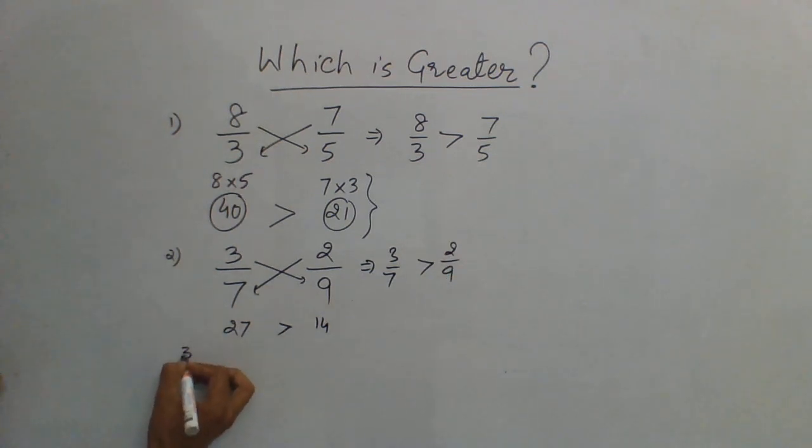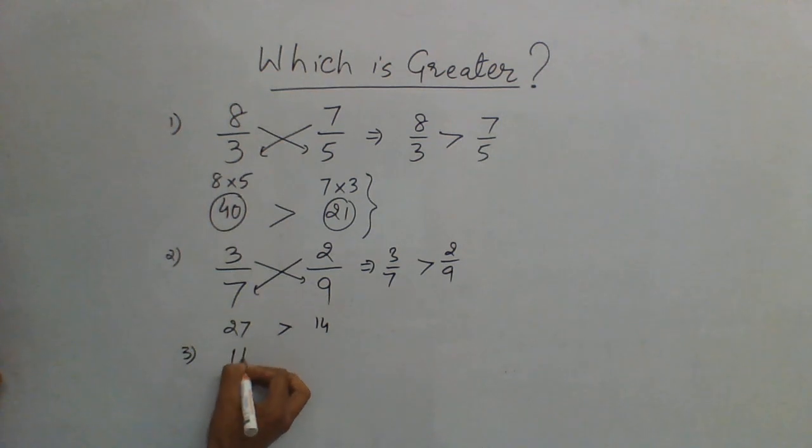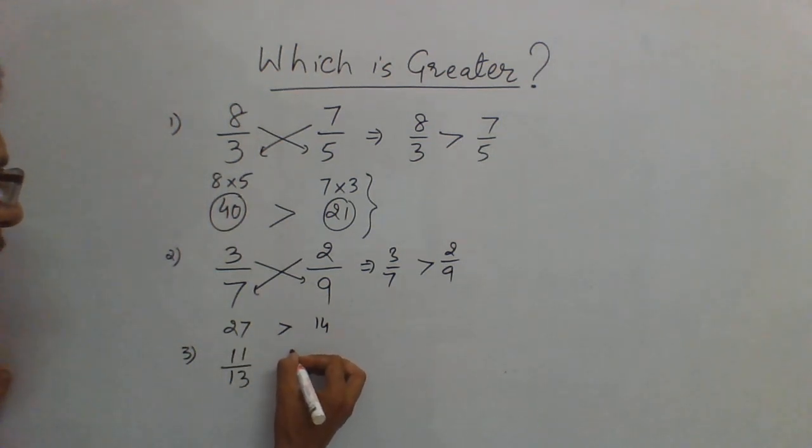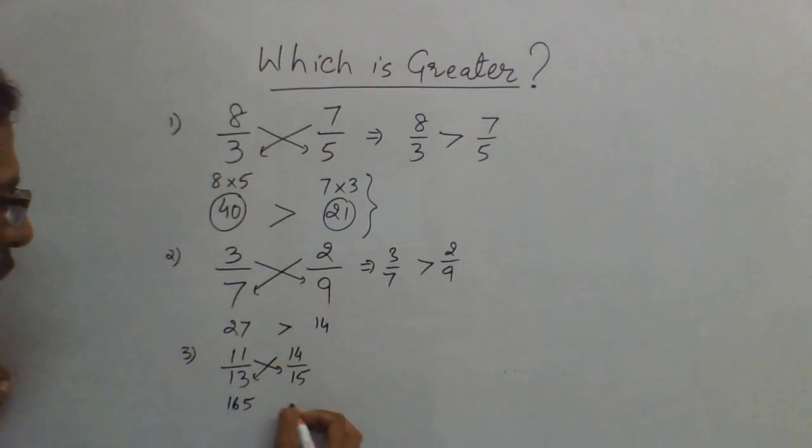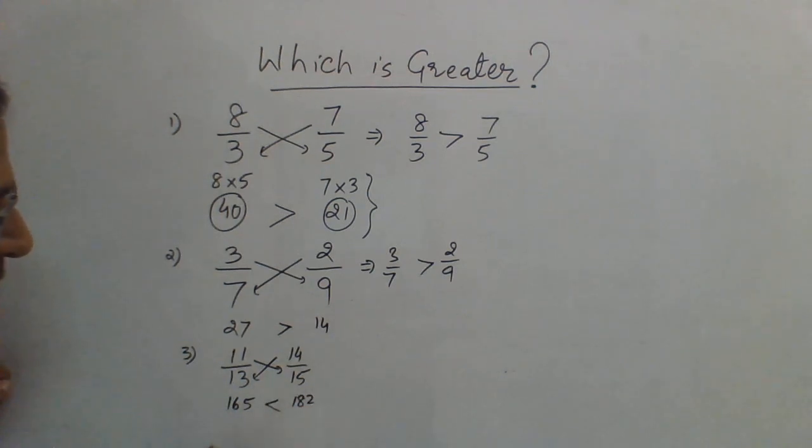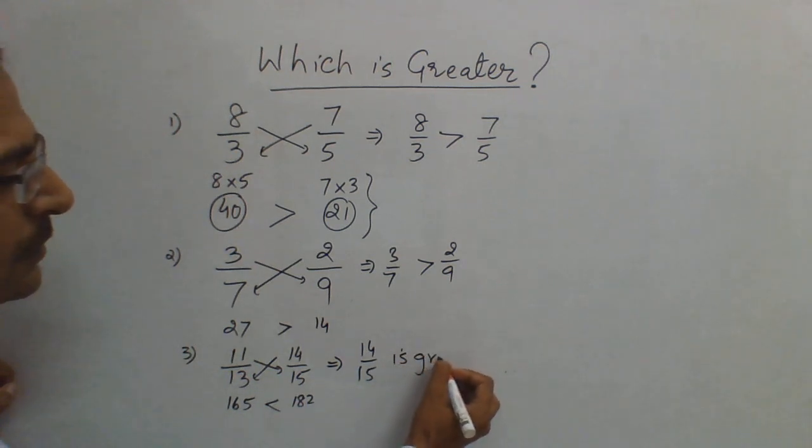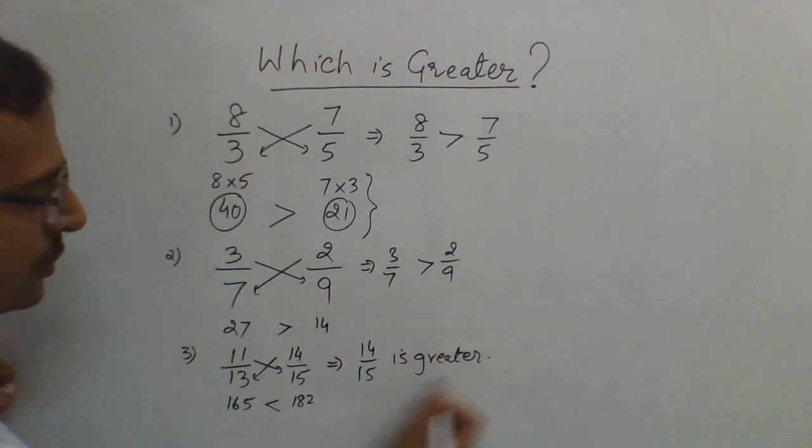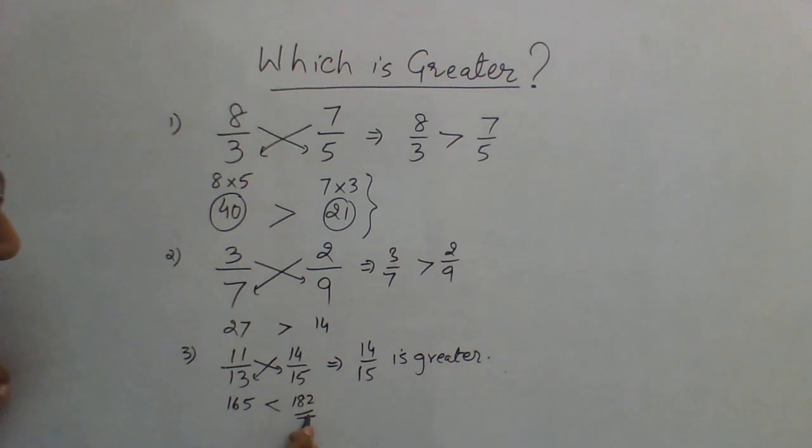Likewise, suppose you have 11 by 13 and on the other side you have suppose 14 by 15. Now you see 11 into 15 is going to give me 165 and 14 into 13, 140 plus 42, 182. So 182 is greater, that means 14 by 15 is greater. So the side which gives you a greater product, that side fraction will be greater.